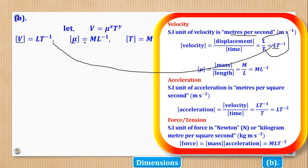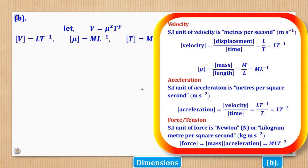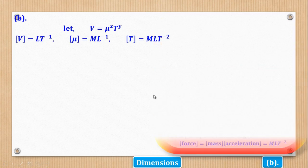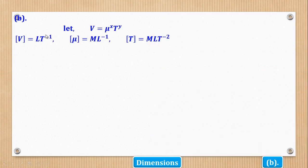Then T was tension, which is the same as force. Force is mass times acceleration, so the dimension is M times LT to power negative two, giving MLT to power negative two. After getting all the dimensions, you can now substitute.